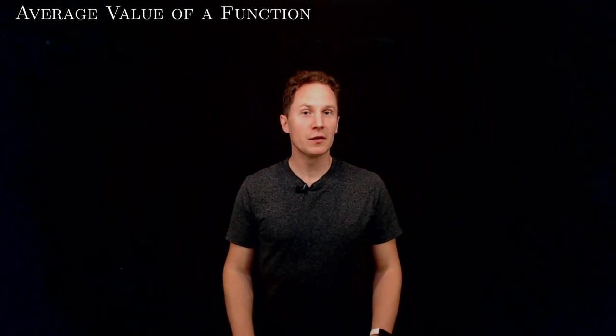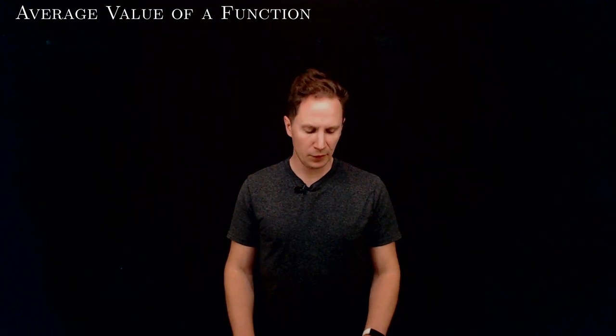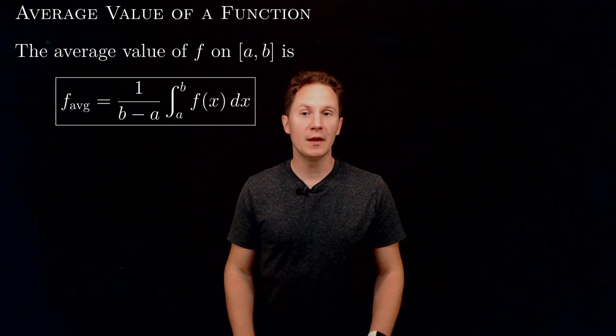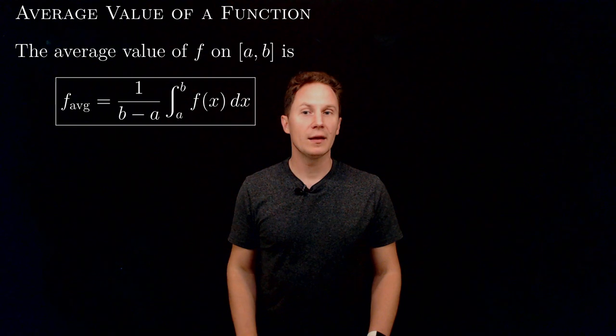The average value of a function over an interval can be found using integrals. Namely, the average value of a function f on a closed interval [a,b] is given by 1 over b minus a times the integral from a to b of f(x) dx.